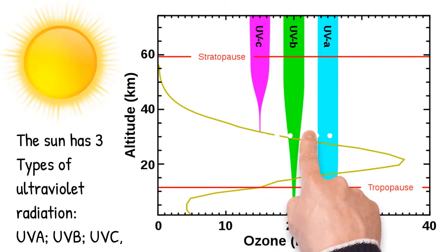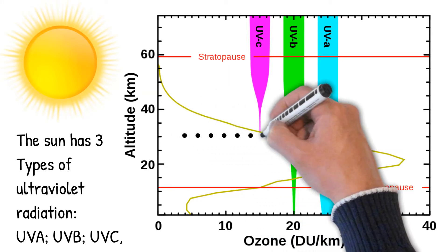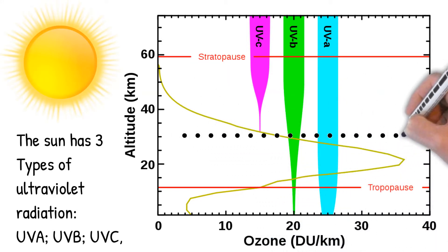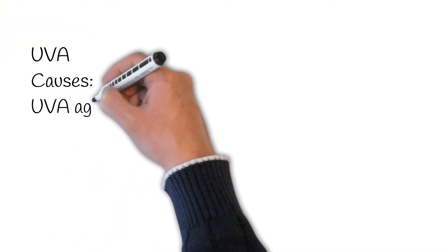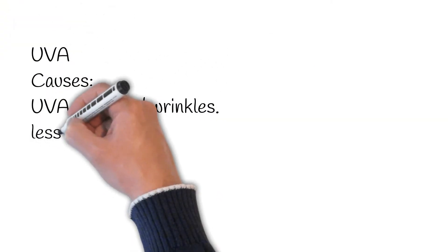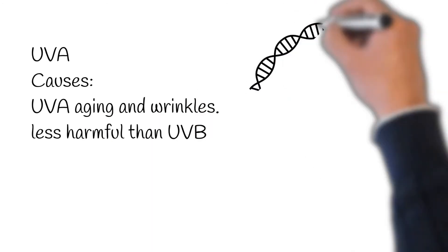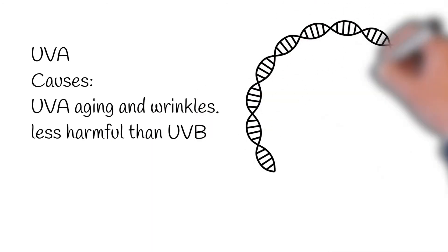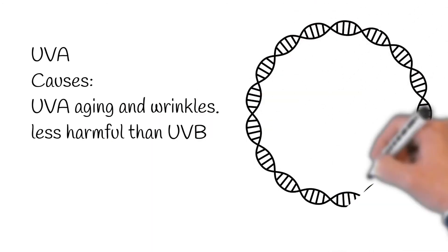UVA causes aging and wrinkles. UVA was considered not harmful or less harmful than UVB, but today it is known to contribute to skin cancer via indirect DNA damage through free radicals such as reactive oxygen species.